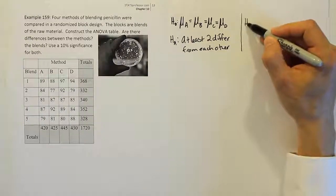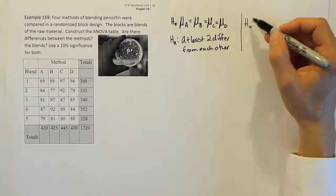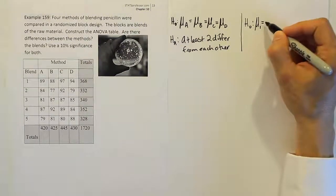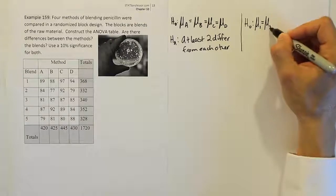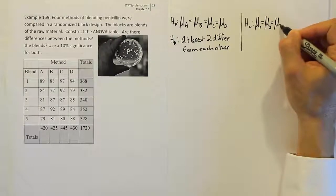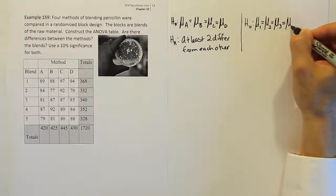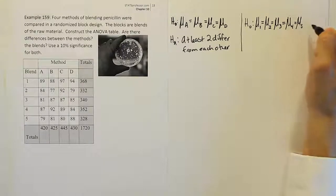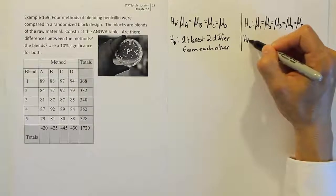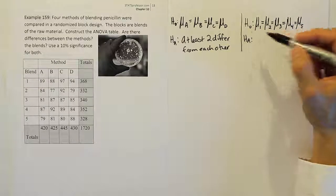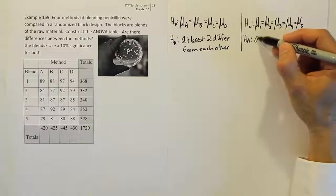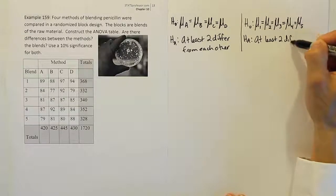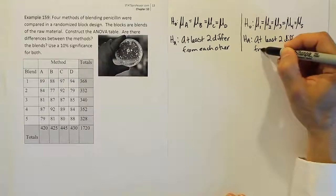Now let's set up H0 for the blocks. For the blocks, we're talking about blends one through five. H0 states that the mean for blend one equals the mean for blend two equals the mean for blend three equals the mean for blend four equals the mean for blend five. The alternative hypothesis again says that at least two differ from each other.